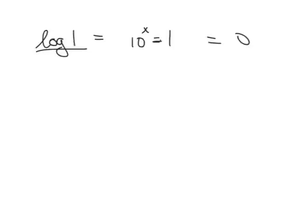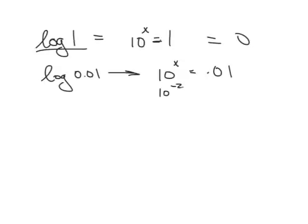If I have the log, 0.01, that means what number can I put on x that's going to give me 0.01 for an answer? And that particular one is going to be negative 2. 10 to the negative 2 equals 0.01. Okay, now let's look at this. What does 10 to the negative 2 look like?